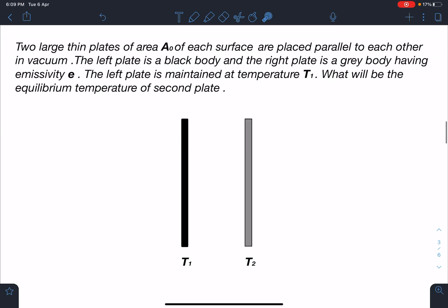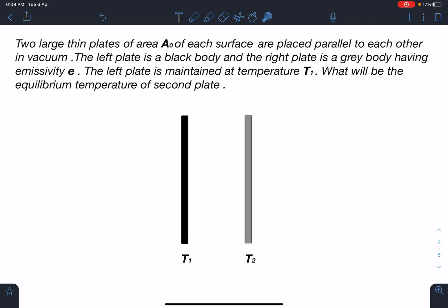Here is the problem statement: two large thin plates of area A₀ of each surface are placed parallel to each other in vacuum. The left plate is a black body and the right plate is a gray body having emissivity e.